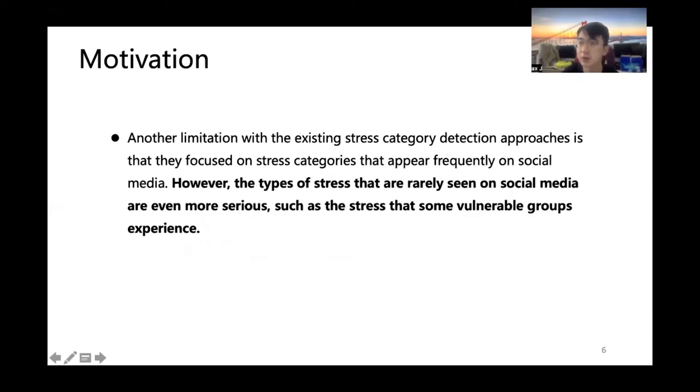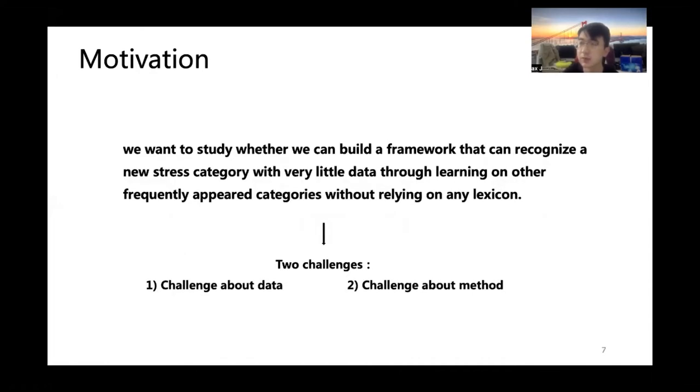The other limitation of the existing stress category detection approaches is that they focus on stress categories that appear frequently on social media. However, the types of stress that are rarely seen on social media are even more serious, such as the stress that some vulnerable groups experience. For example, the stress of women due to pregnancy, as they tend to suffer from lots of stress in pregnancy, such as previous negative experiences with pregnancy, having an unplanned pregnancy, dealing with psychological changes, and so on. This inspires us to call on society to give more care, understanding, and support to the vulnerable groups who suffer from this rarely appeared stress category.